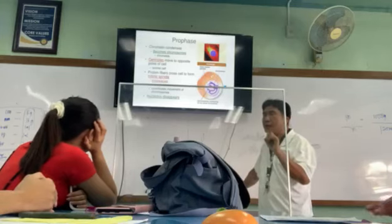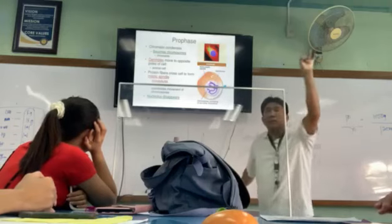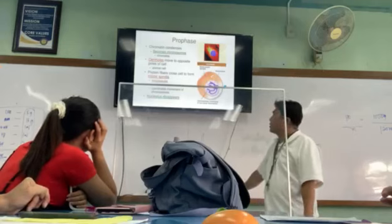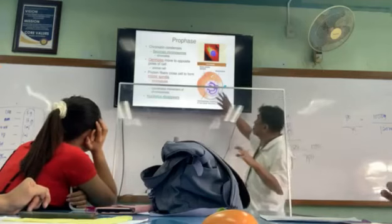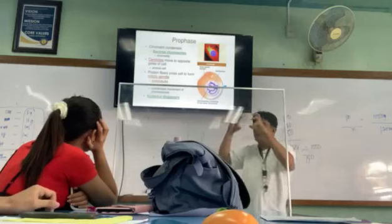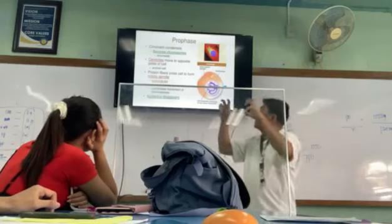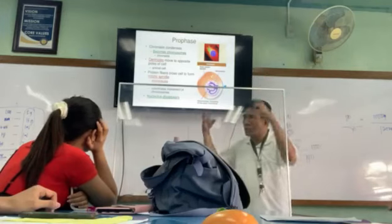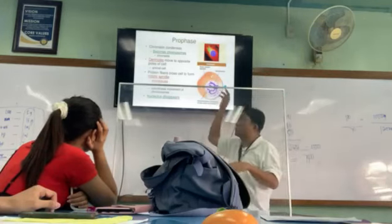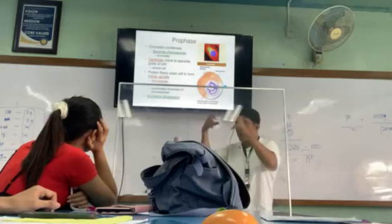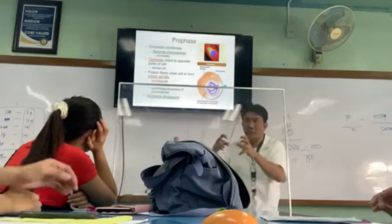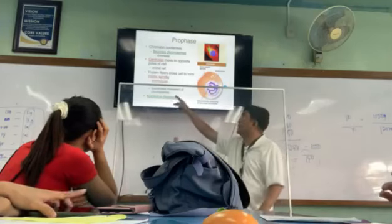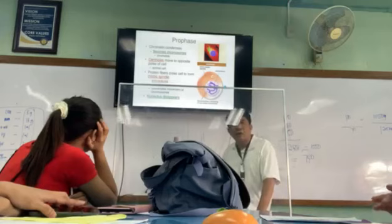Microtubules are composed of actin and other proteins, and they coordinate the movement of the chromosomes. During prophase, after the chromatin condenses, you are both together and you form the chromatids or the chromosomes. The formation of chromosomes and their movement is coordinated by the microtubules.